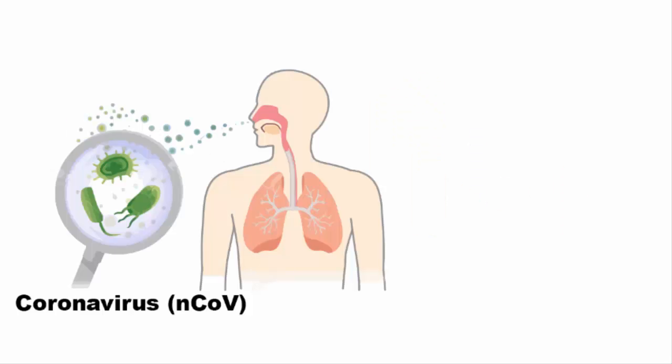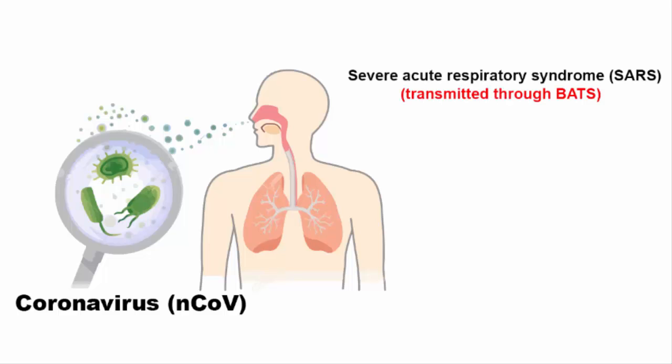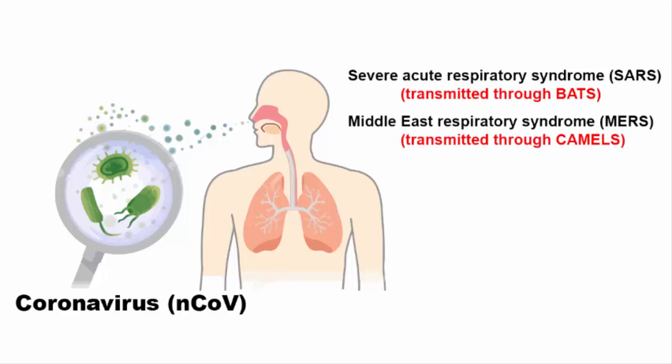This coronavirus is said to be from the same family of viruses that include Severe Acute Respiratory Syndrome and Middle East Respiratory Syndrome, both of which are respiratory diseases that are transmitted from animals to humans.